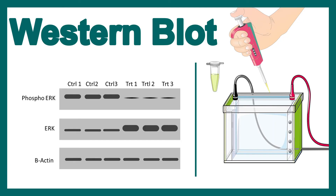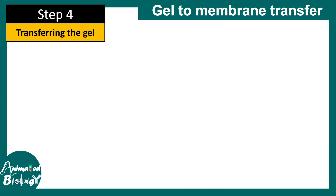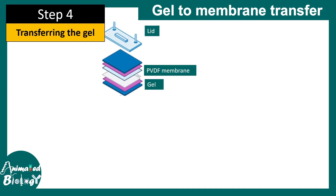Now let's move to the Western blot step, since we have already separated the proteins in the gel. It's time to blot and detect whether our protein of interest is present or not. At this point, the gel separation simply tells us where different proteins ended up — our protein of interest may or may not be present. We now need to transfer the separated proteins from the gel to a membrane, which is done by electroblot.